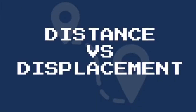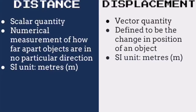We will be talking about the difference between distance and displacement. Distance is a scalar quantity — it is the total length covered by a moving object regardless of the direction of motion. Displacement, on the other hand, is a vector quantity; it is the distance measured in a straight line in a specific direction. The SI unit of both displacement and distance is the same: meters.